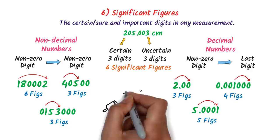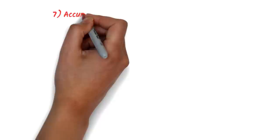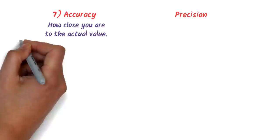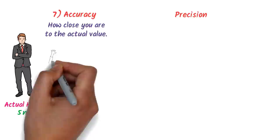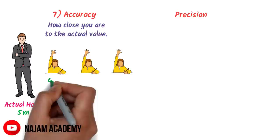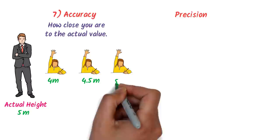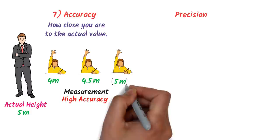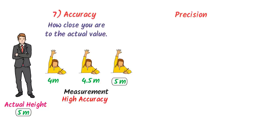The seventh topic is accuracy and precision. Accuracy means how close you are to the actual value. For example, consider a man whose actual height is 5 meters. Three students measure it as 4 m, 4.5 m, and 5 m. Since one measurement exactly matches the actual value of 5 m, we say this set of measurements has high accuracy.